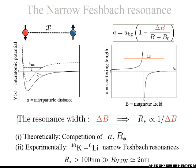There are these two lengths — the scattering length and R star — that compete with each other to determine the ground state of the system. We want to calculate the ground state of the system depending on these two lengths. Experimentally, narrow Feshbach resonances are important because in fermionic mixtures of potassium-40 and lithium-6, there exist only narrow Feshbach resonances. R star in these mixtures reaches higher than 100 nanometers, compared to the standard van der Waals length of 2 nanometers, so we expect a lot of physics coming from R star.